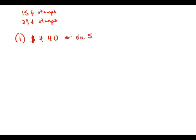No matter how many $0.15 stamps we buy, that will be divisible by five. But the $0.29 stamps, we'd have to buy some multiple of five in order for the combination to come out to be a multiple of five.